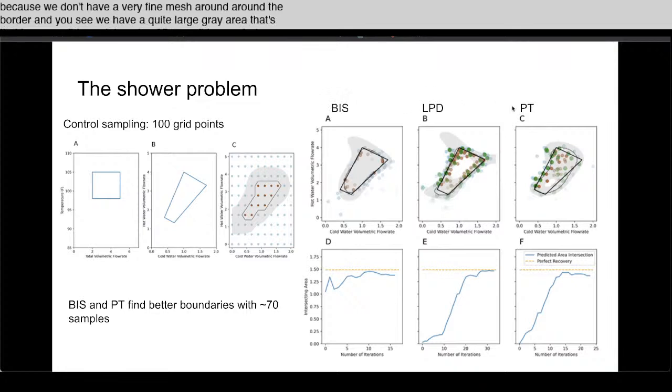If we look at these three different algorithms, all of them do a much better job at finding something that is approximately the correct boundary. The BIS and path tracing, they find better boundaries than this coarse-grained one with only about 70 experiments, so 30% reduction in number of experiments.